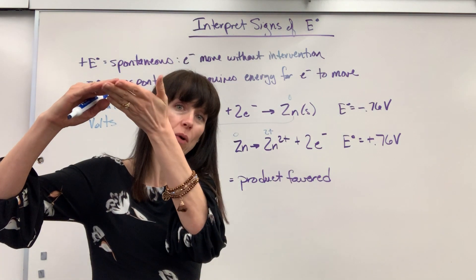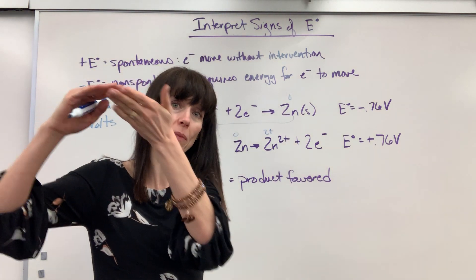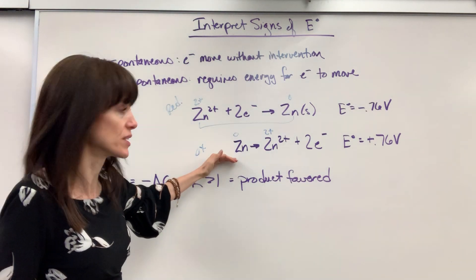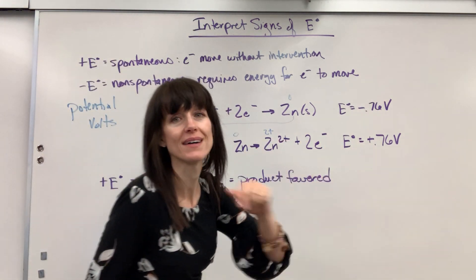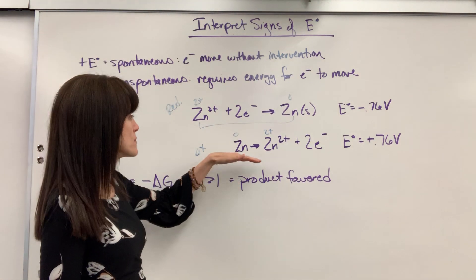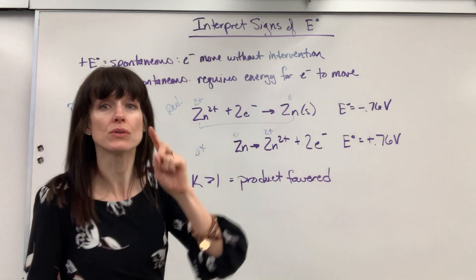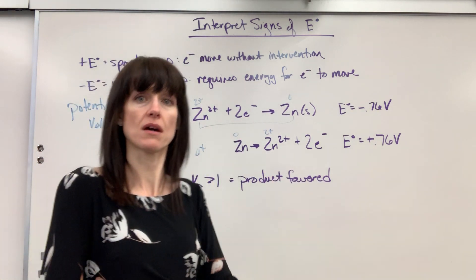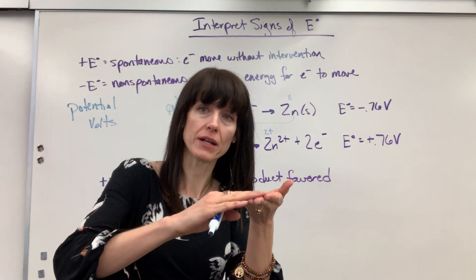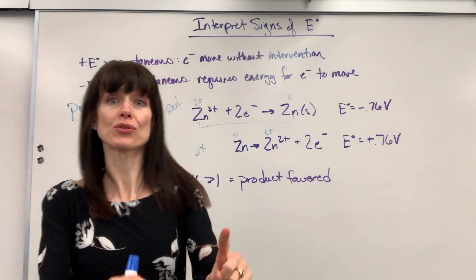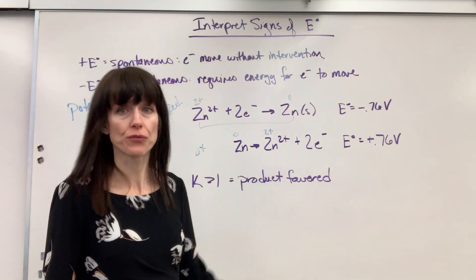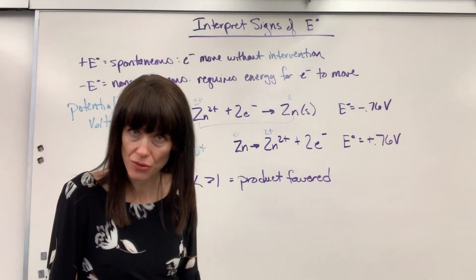I have to force the water to go back up the mountain. When it's oxidation, check it out — positive 0.76. That tells me that zinc will go from zinc to zinc 2+ and lose two electrons by itself. That's like the river going from top to bottom — naturally the water flows. Naturally, zinc will lose two electrons, and I don't have to force it. It does it by itself.